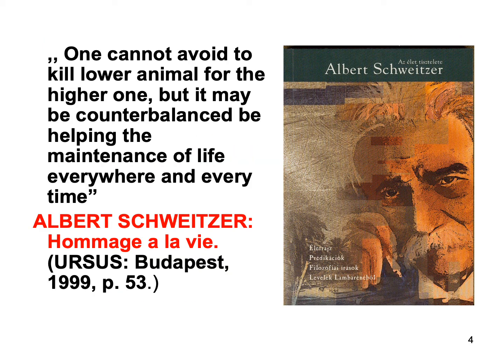We start with Albert Schweitzer. The title of his book is 'Hommage à la Vie,' which is closer to the animal rights tradition, but it is useful in practical life too. One cannot avoid killing lower animals for the higher ones, but it may be counterbalanced — it must help the maintenance of life everywhere and every time. 'Lower animal' means lower in evolutionary development.